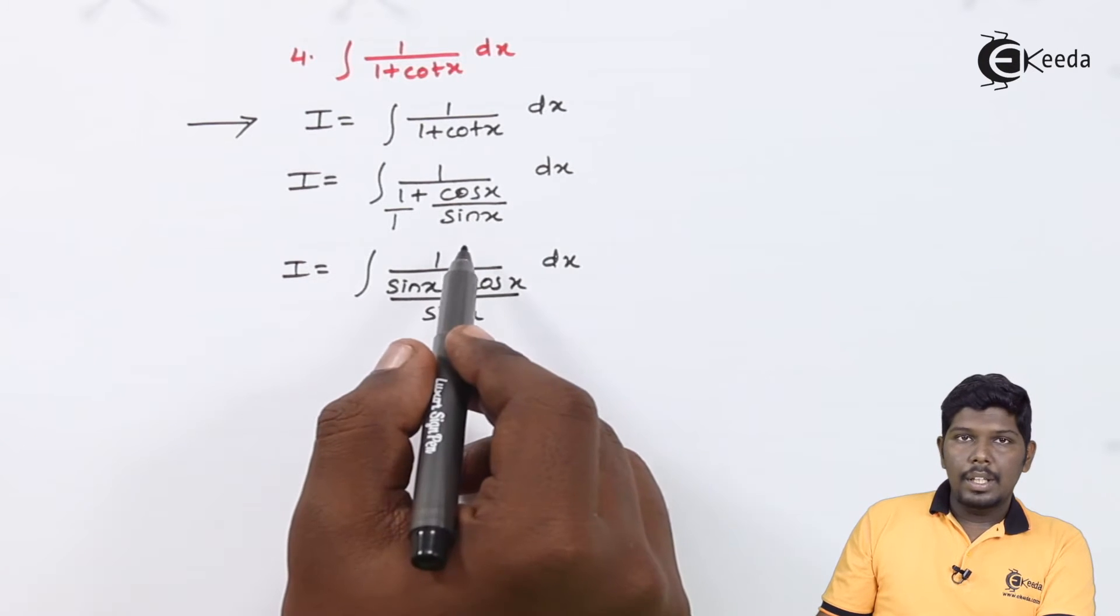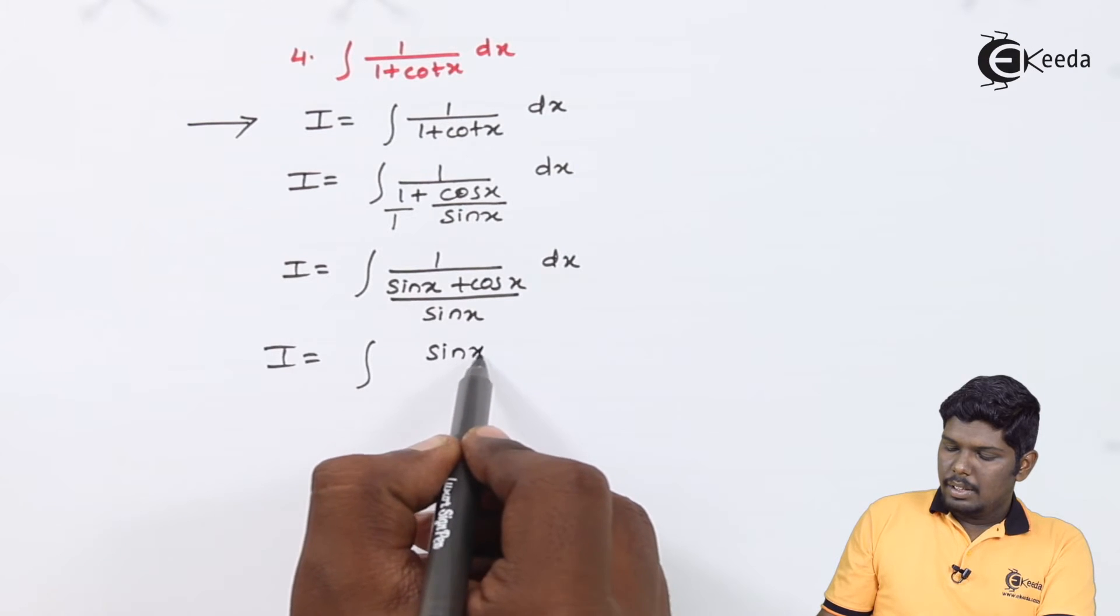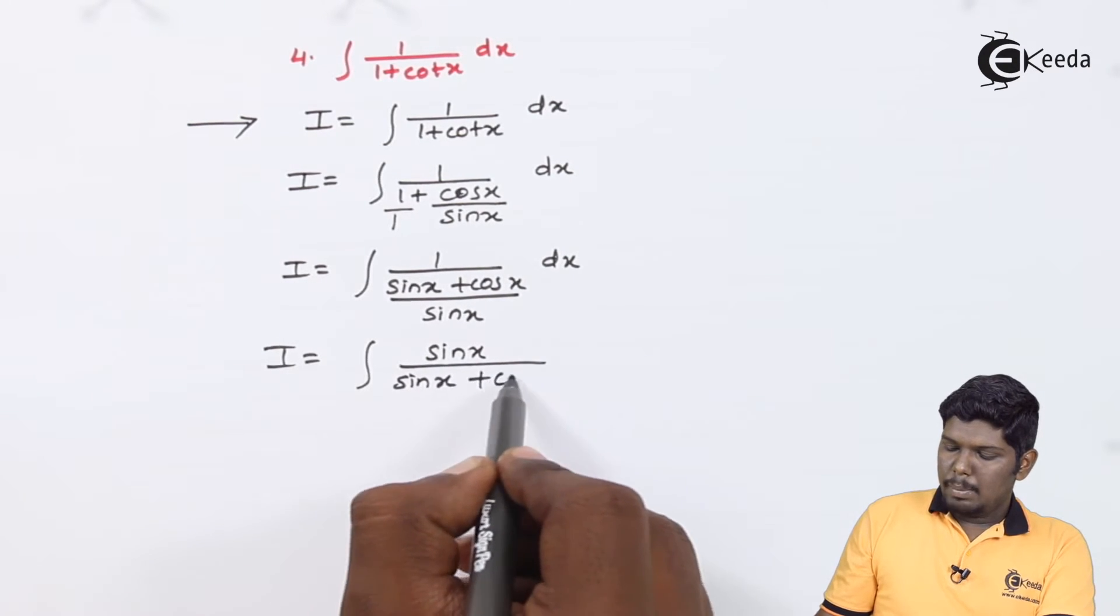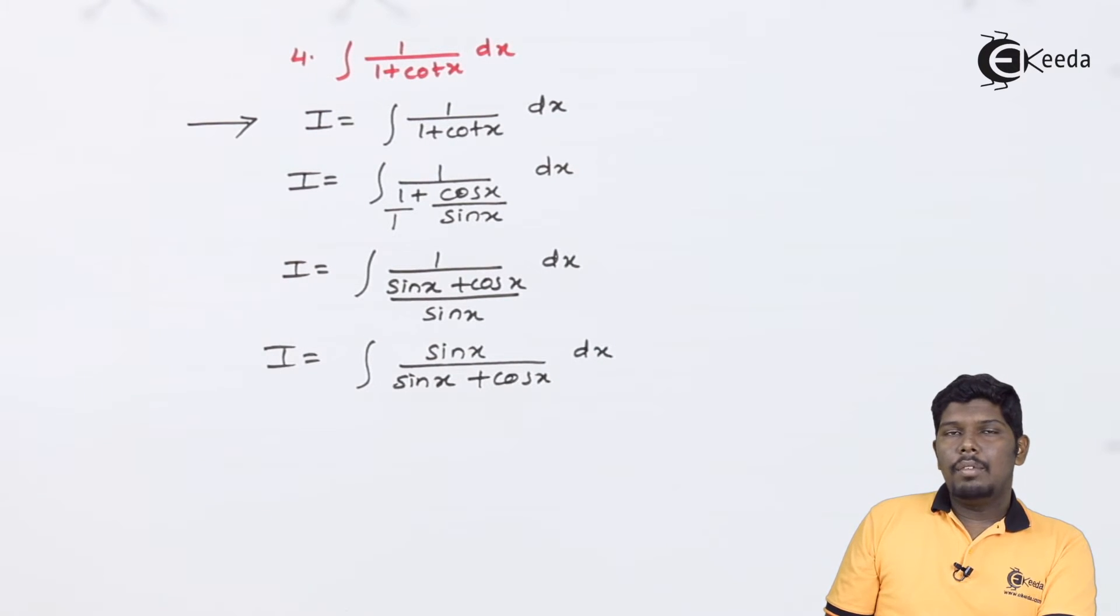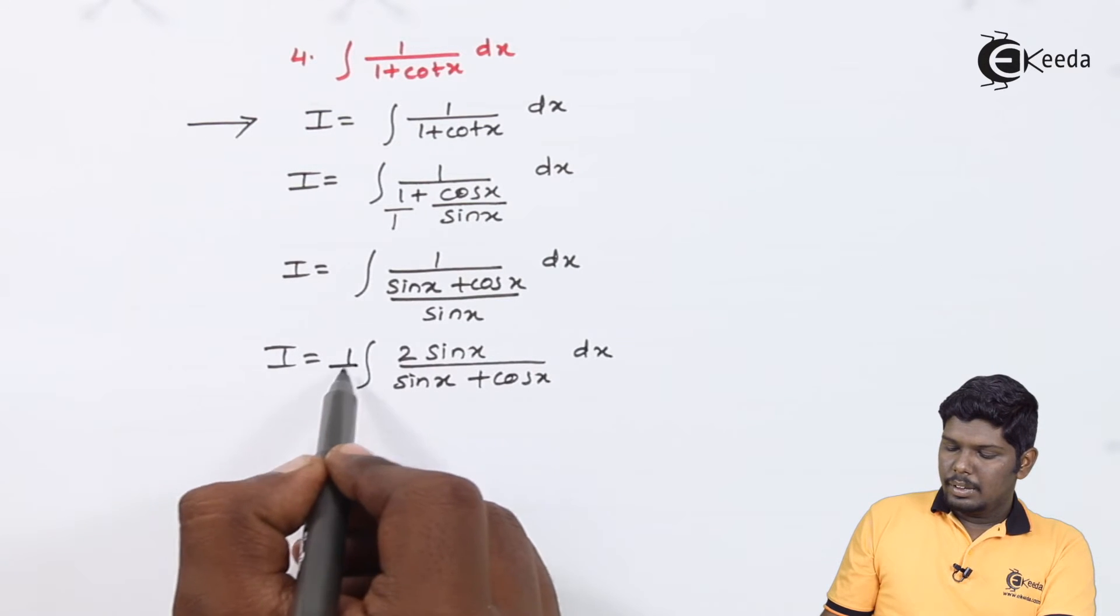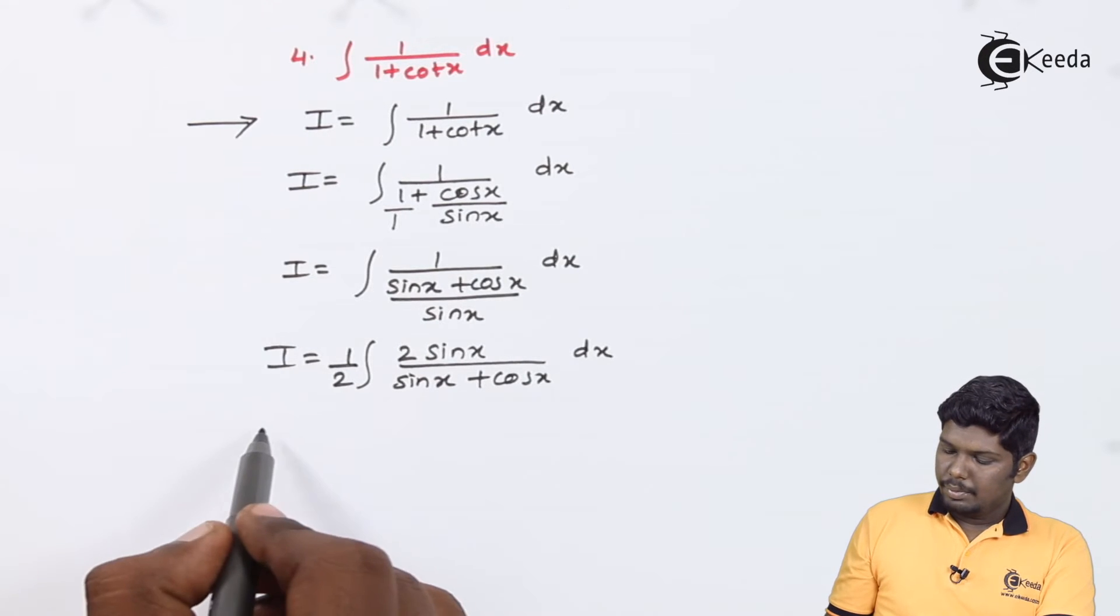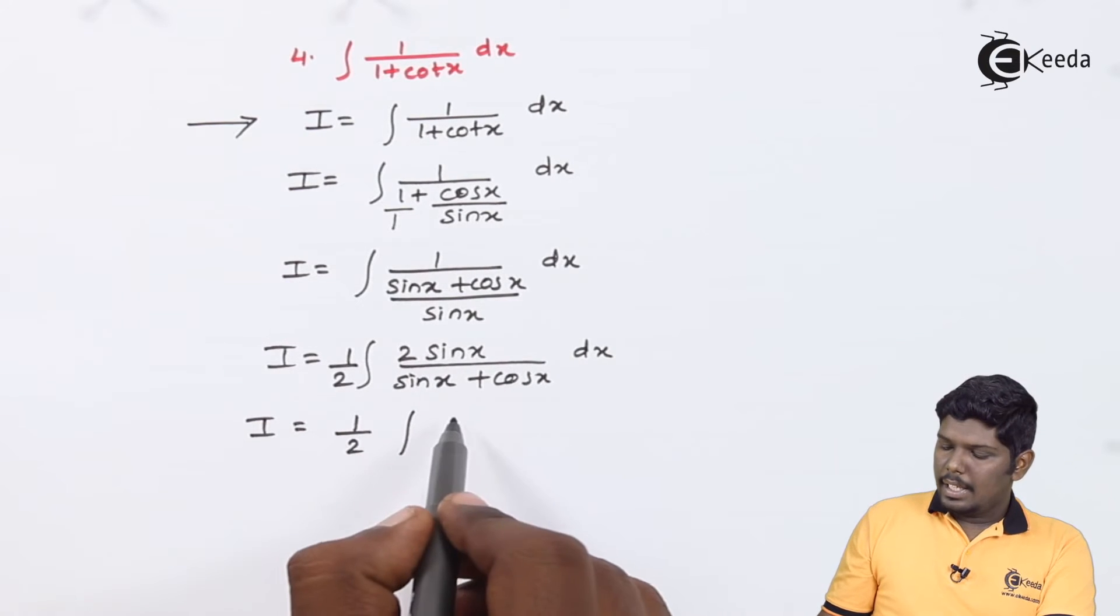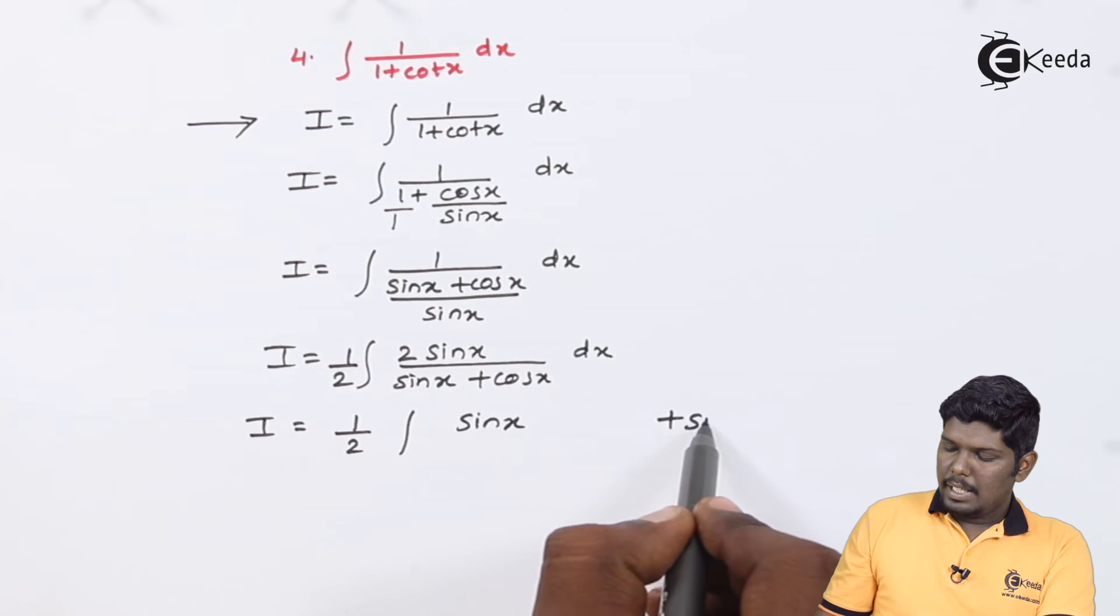This sin x will come in the numerator: sin x upon sin x plus cos x dx. Now the next step that we can do is balance 2 here. Now let us see what is the use of these 2. Firstly, we can split 2 sin x as sin x plus sin x.